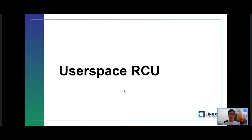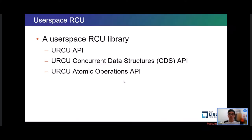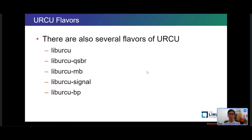Next, let's move on to userspace RCU. Userspace RCU is an RCU library in userspace. It provides not only URCU APIs, but also APIs about concurrent data structures and atomic operations. There are also several flavors of userspace RCU, and each flavor maps to one linking argument.